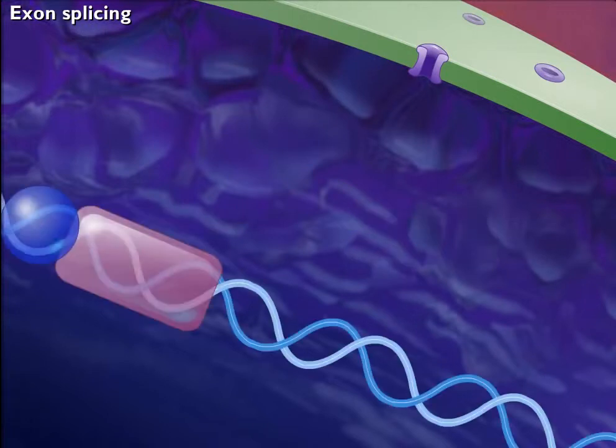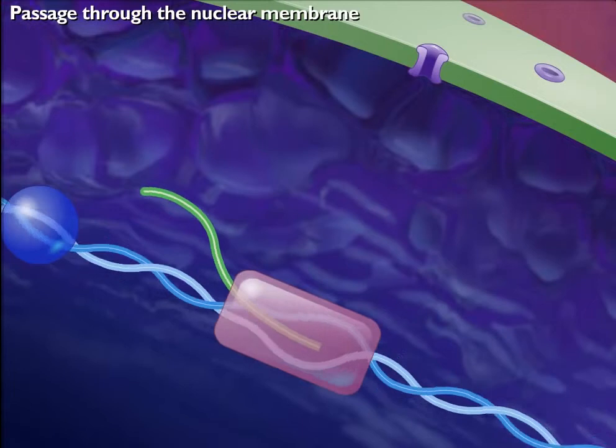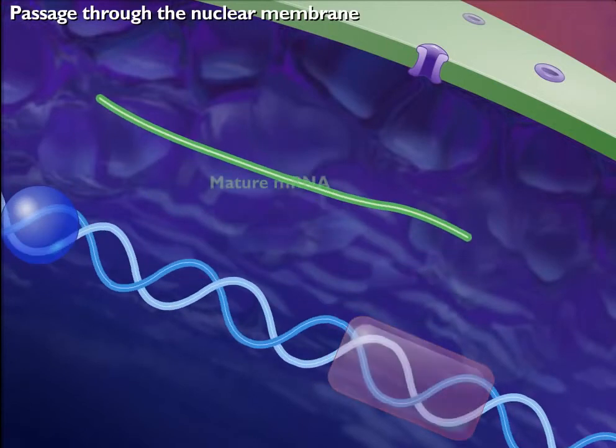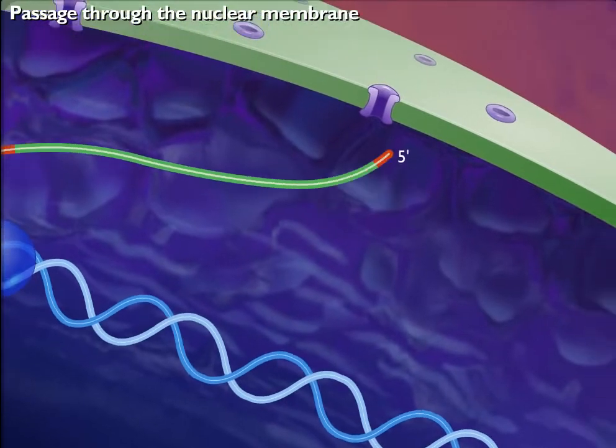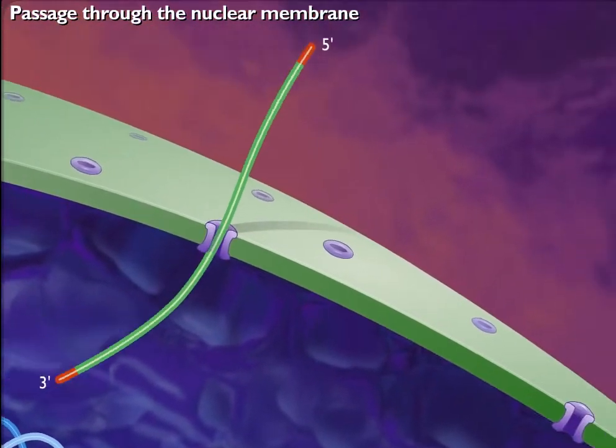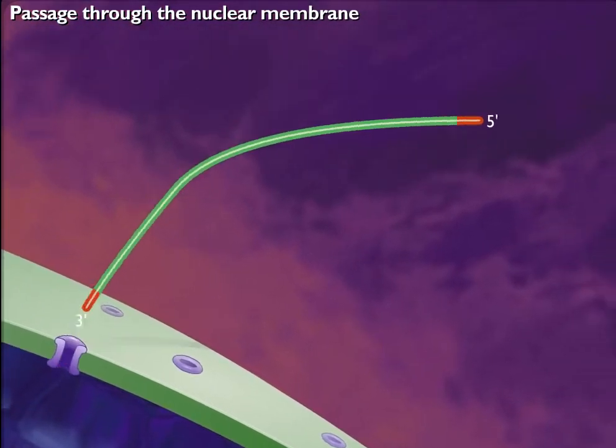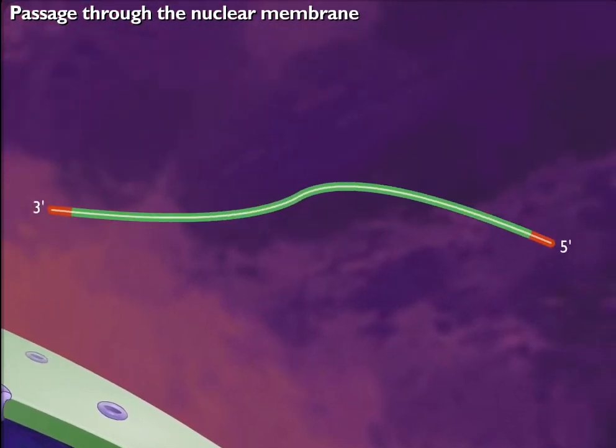Gene expression can be regulated by controlling access to or efficiency of transport channels. The passage of an mRNA transcript across the nuclear membrane is an active process requiring that the transcript be recognized by receptors lining the interior of the pores.